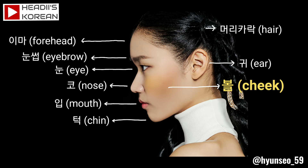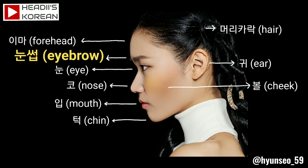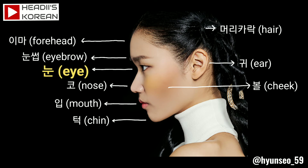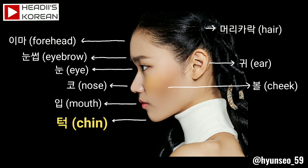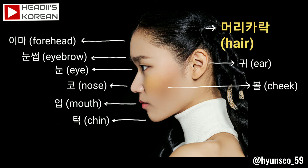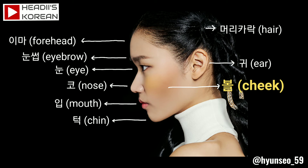Okay, now let's try to read this one more time with more speed. 이마, forehead. 눈썹, eyebrow. 눈, eye. 코, nose. 입, mouth. 턱, chin. 머리카락, hair. 귀, ear. 볼, cheek.